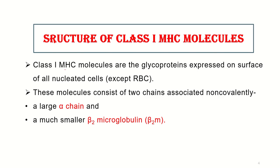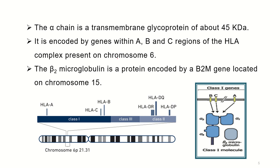Class 1 MHC molecules are glycoproteins which are present on all nucleated cells. Class 1 MHC molecules have two chains: a big chain called the alpha chain and a small chain called beta 2 microglobulin, abbreviated as beta 2m. The alpha chain is a trans-membrane glycoprotein, meaning it spans the cell membrane, and has a molecular weight of 45 kilodaltons.